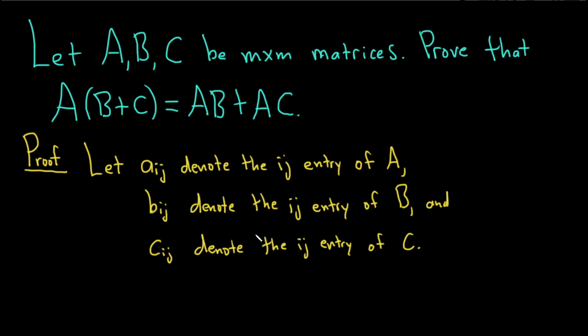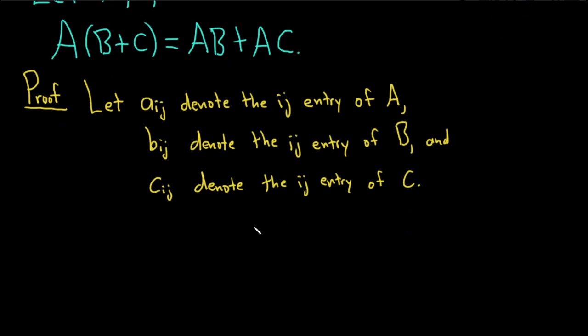All right, so now let's start looking at each side. Let's focus on this left hand side first. So first let's take a look at what the ij entry of B plus C will look like. So the ij entry of B plus C is simply the ij entry of B plus the ij entry of C.